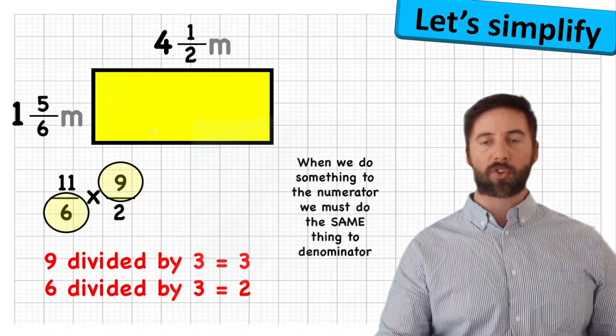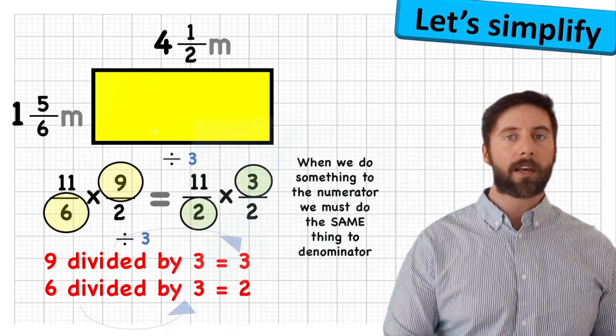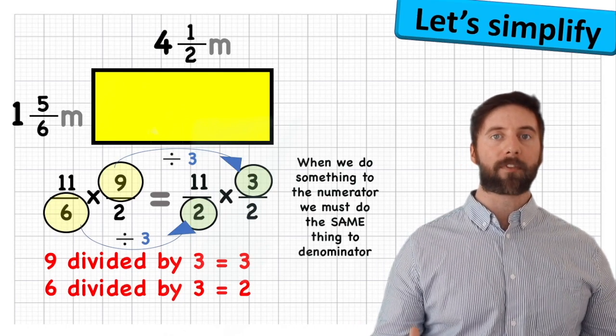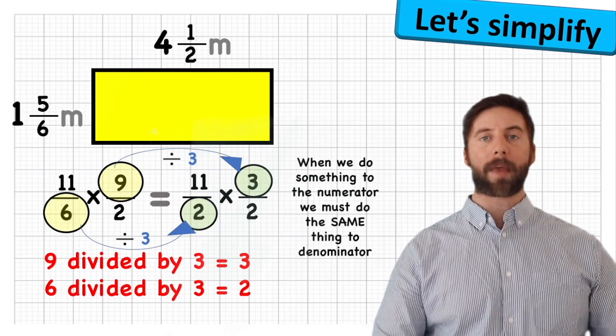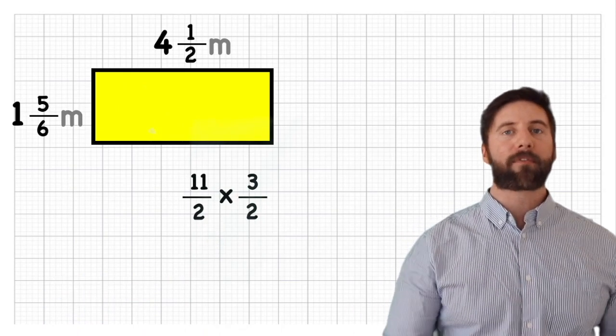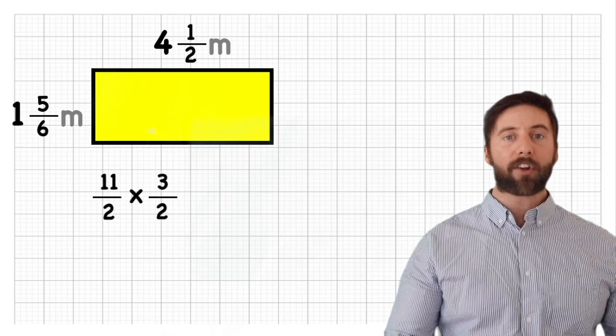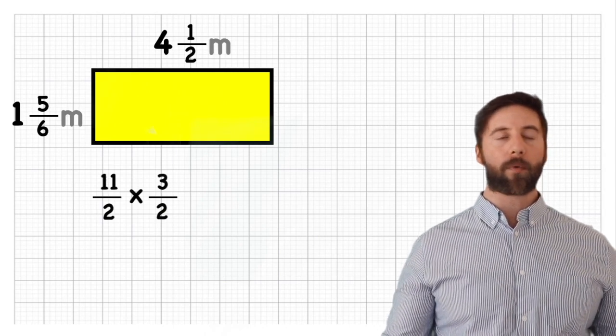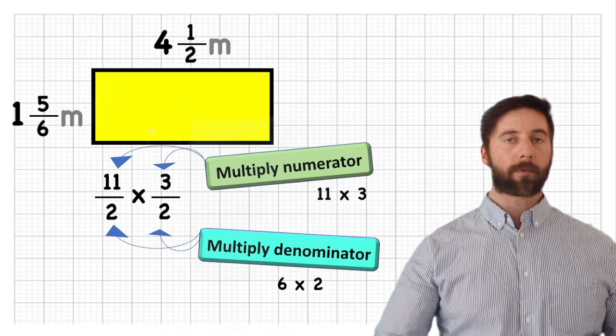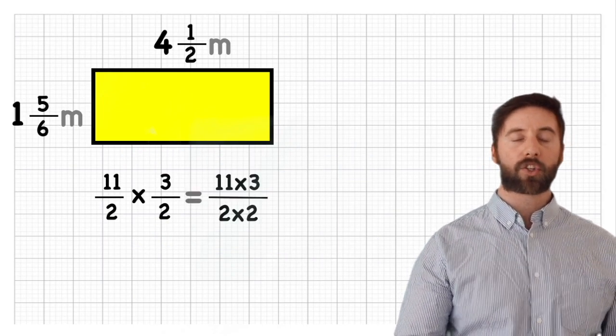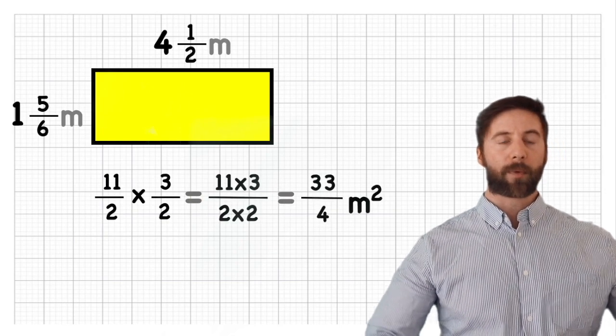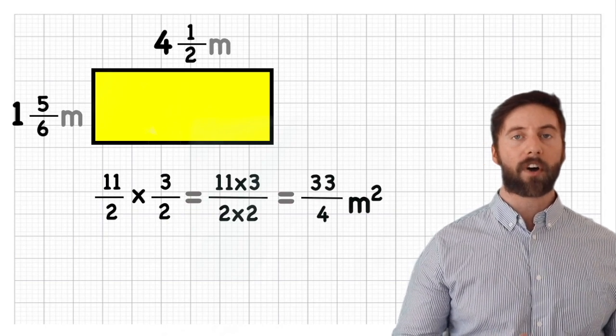So nine divided by three is three. So I can change that on that top row to a three. But whatever I do to the top row, I must do it to the bottom row. So six divided by three is two. Now sometimes you won't be able to simplify the question, but if you can, it's always worth doing because it makes our numbers a lot smaller and a lot more manageable to see and to use. So my final set of improper fractions and the ones we are going to multiply are eleven over two times three over two. And all we do when we multiply in fractions is we multiply the top row and then we multiply the second row. So I'm going to go ahead and put eleven times three over two times two. Now eleven times three is thirty-three and two times two is four. So my answer as an improper fraction is thirty-three over four.